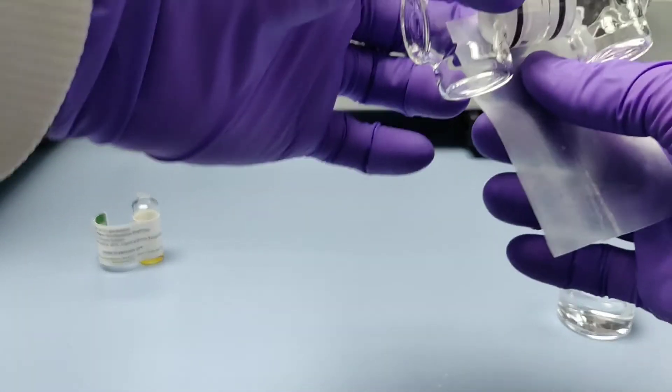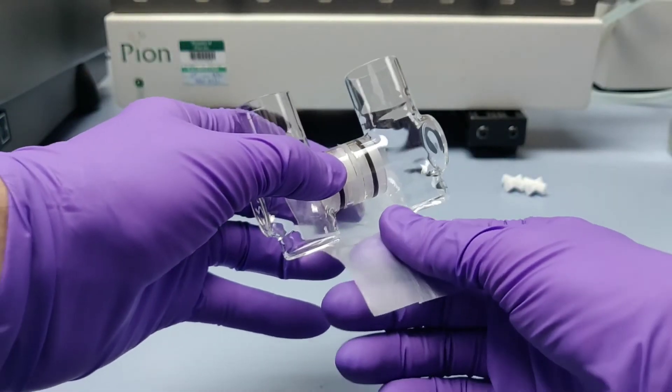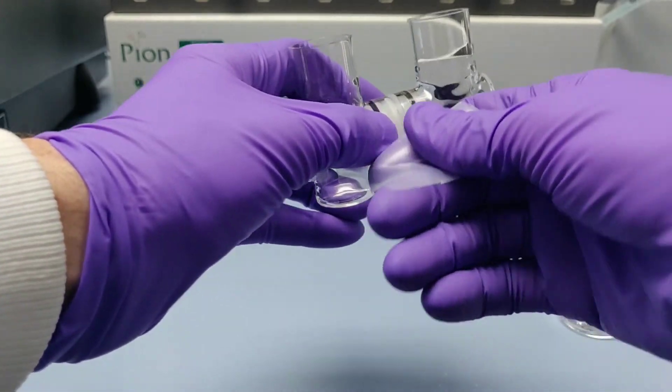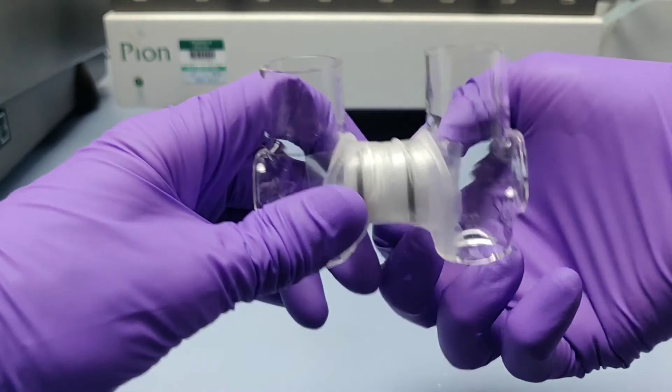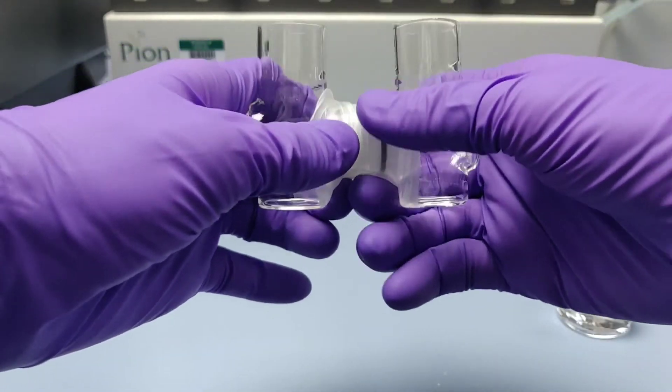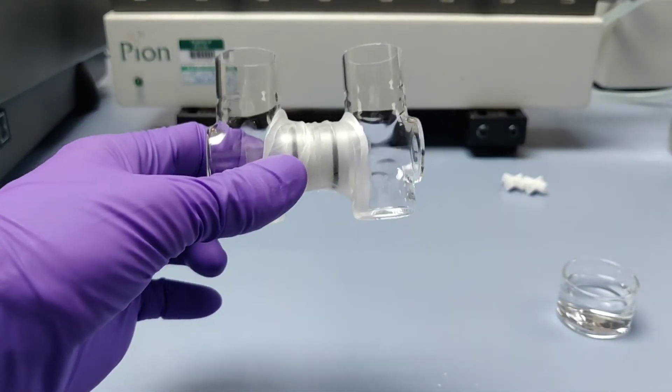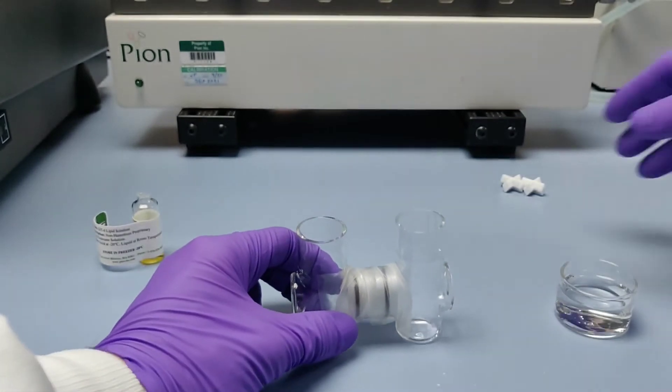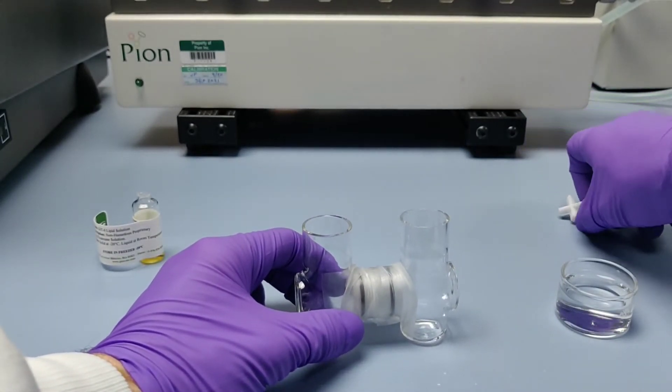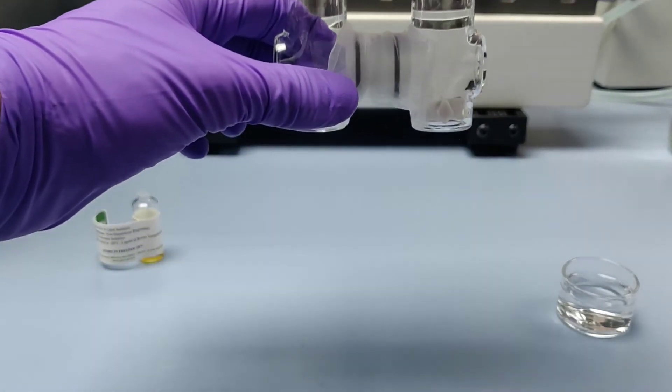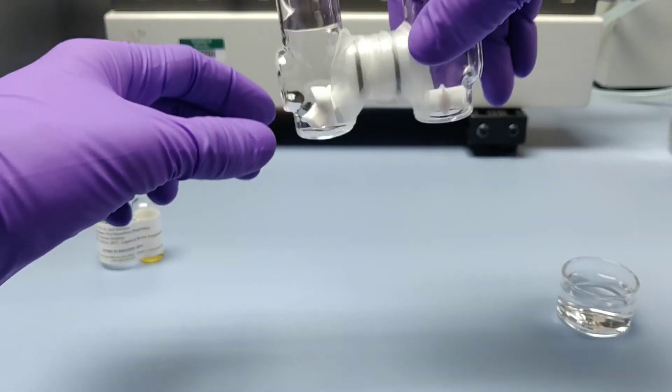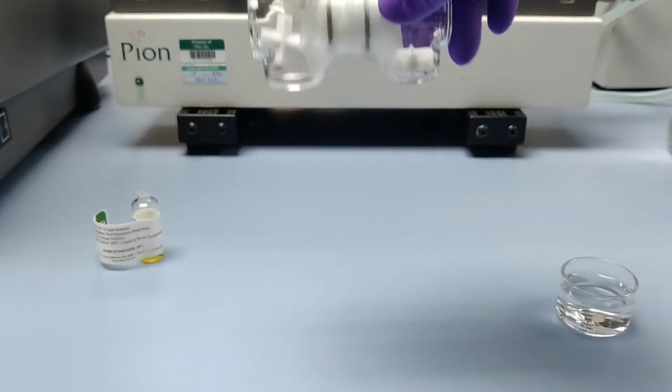Finally, the join between the two halves can be wrapped in parafilm to ensure against any leakage. A cross-stir bar is placed into each chamber, and the donor and acceptor chambers are filled with the relevant media.